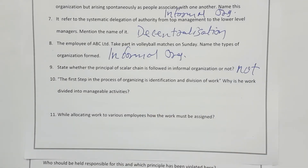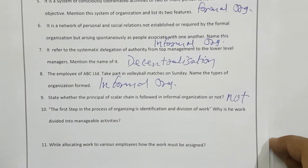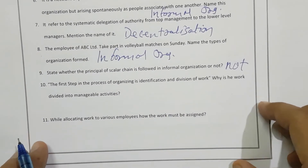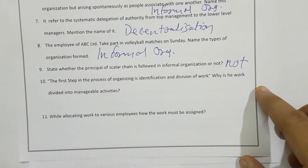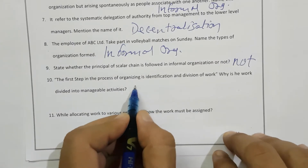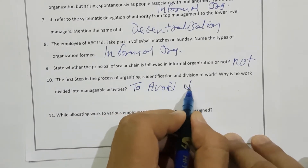The first step in the process of organizing is identification of work. Why is work divided into manageable activities? They are doing this for just one reason — to avoid duplication of work.